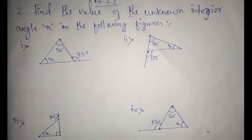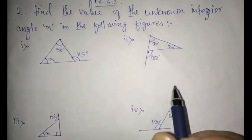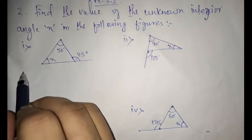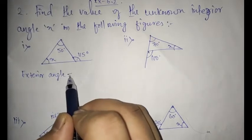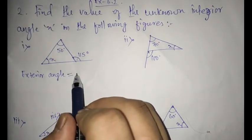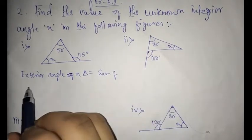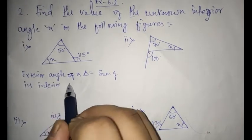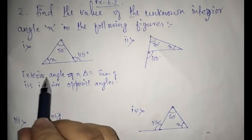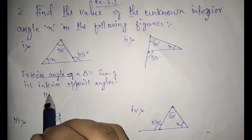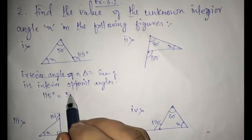You all know that the exterior angle of a triangle is equal to the sum of its interior opposite angles. So I'm writing here for this question: the exterior angle of a triangle is equal to the sum of its interior opposite angles. So for this figure, that means 50 plus x.